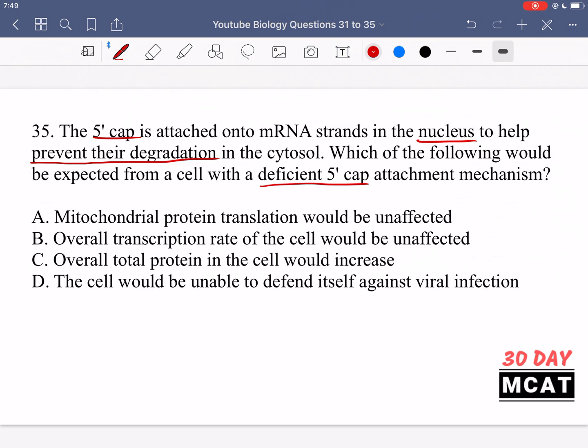Now, we have a deficient five prime cap. So when we can't add something to mRNA, which prevents their degradation in the cytosol, then what can we expect to happen? Option A is saying mitochondrial protein translation would be unaffected. And that is true. So that's our answer here.